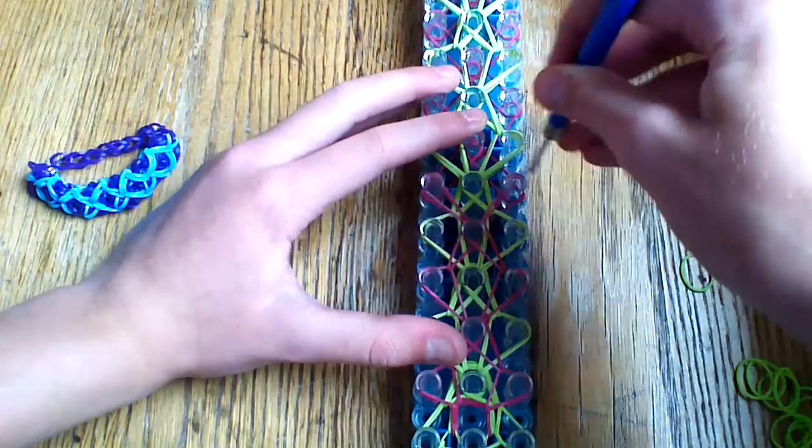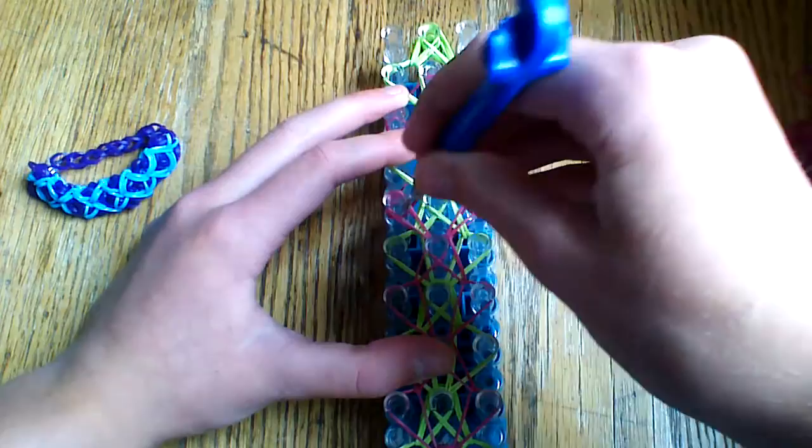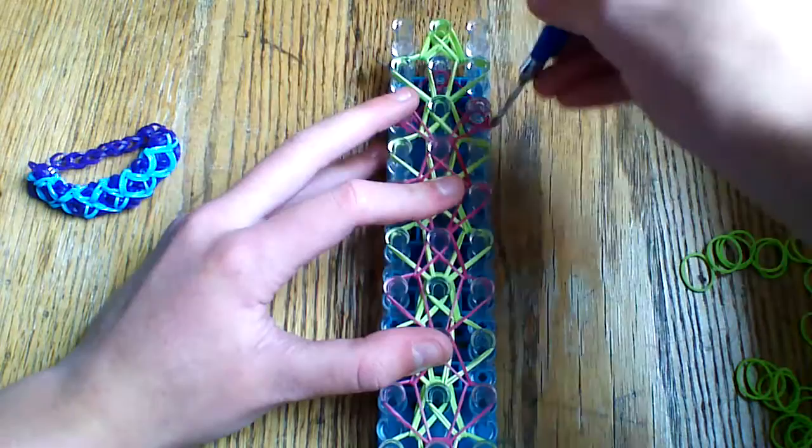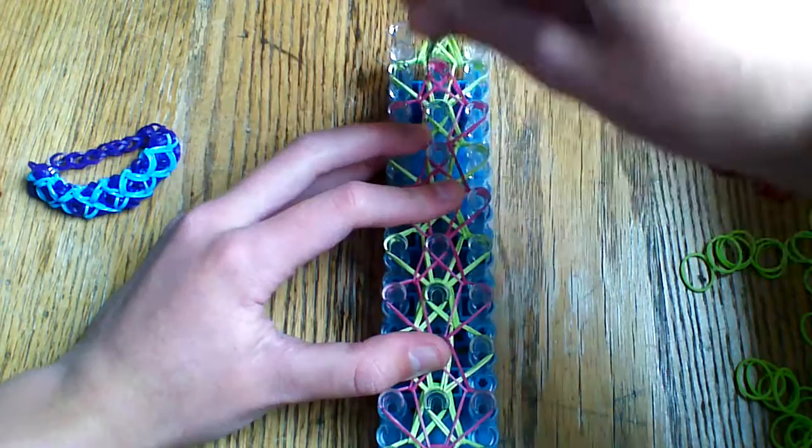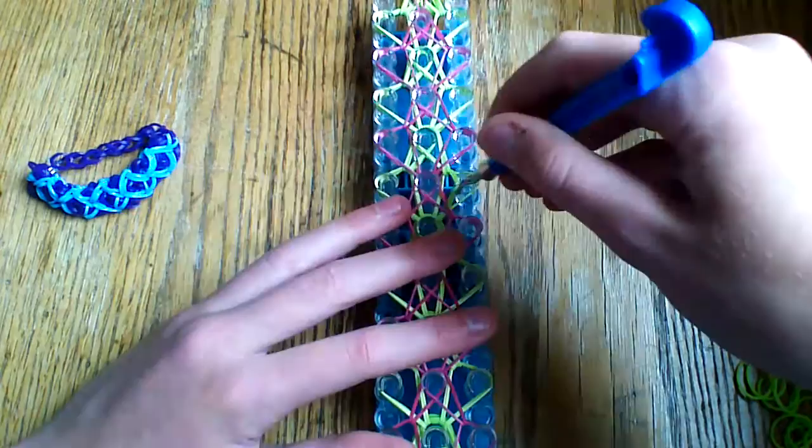And this one will not be as difficult as the green, I promise. And then once you get here, you're just going to loop that last single band straight up. So then you can either take it off from the bottom of your loom or from the sides or however you want to do it.